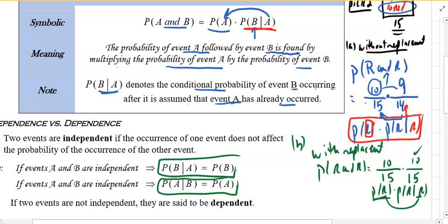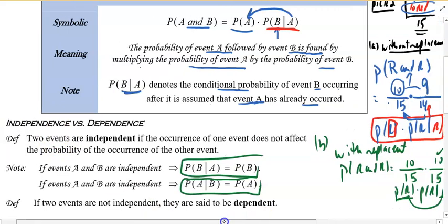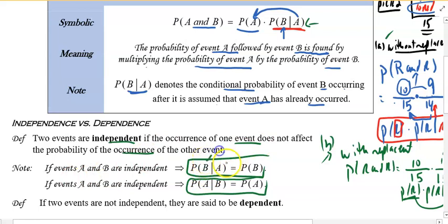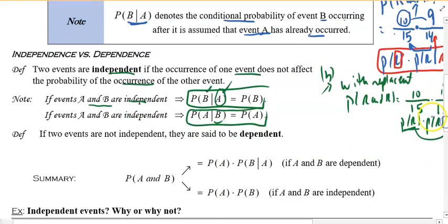If the events are independent, one of them does not affect the other. Two events are independent if the occurrence of one event does not affect the occurrence of the other event. In Part A they were dependent — that's why it made a big difference. In Part B they were independent. The fact that I replaced the marble back in did not affect the probability of getting a red, given I already picked a red, or vice versa. If events A and B are independent, then the fact that A occurred does not affect B in any way. If two events are not independent, we say they are dependent, and this probability will be affected.